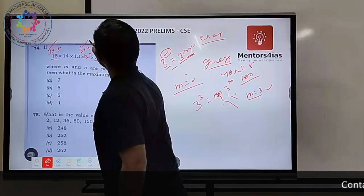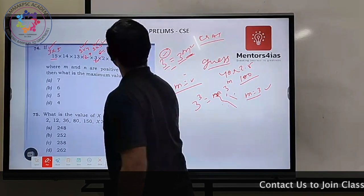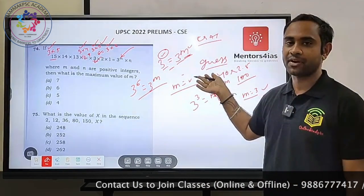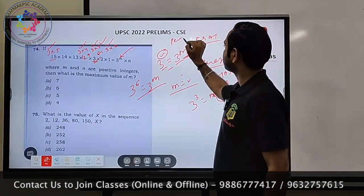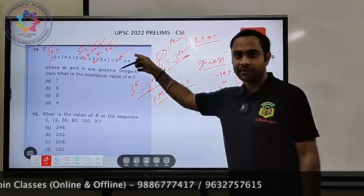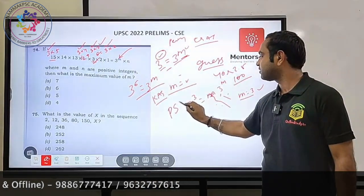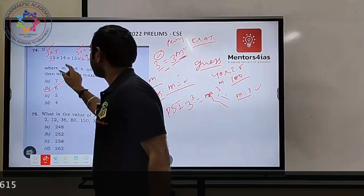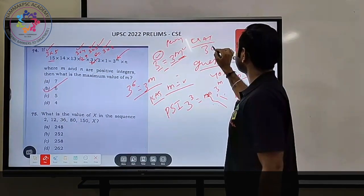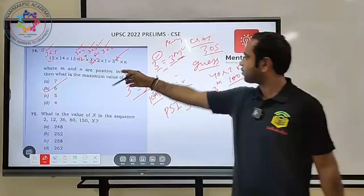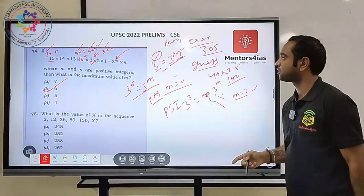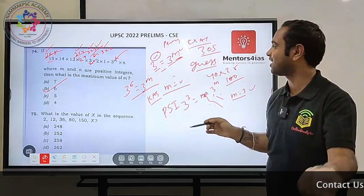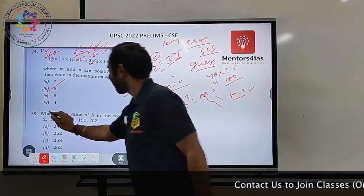So 15! = 3^6 × n, which means 3^6 = 3^m, therefore m = 6. This is the answer. This is not even a difficult level question — it should not be presented as a tough UPSC question. You can answer it just by looking. As I promised, 30 seconds. So m equals 6.